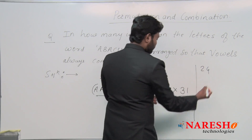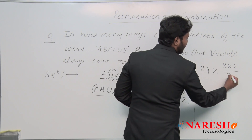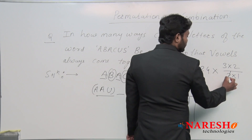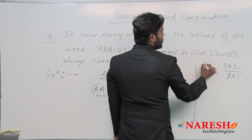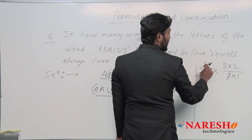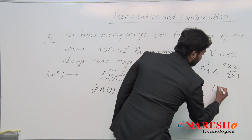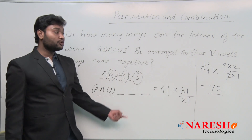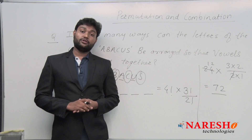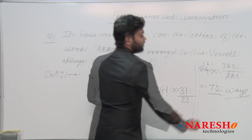Solving this: 4! = 24, and 3! = 3 × 2 = 6, divided by 2! = 2. So we get 24 × (6 / 2) = 24 × 3 = 72. Therefore, there are 72 ways to arrange the letters of ABACUS so that all vowels come together.